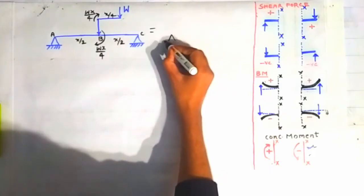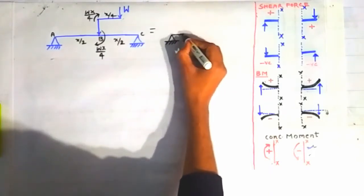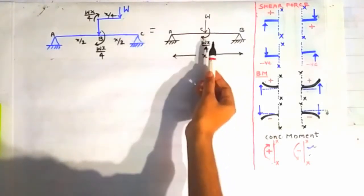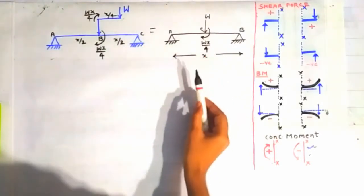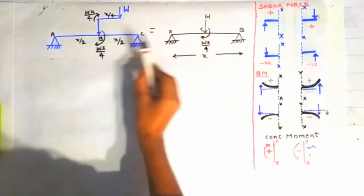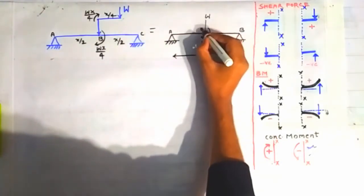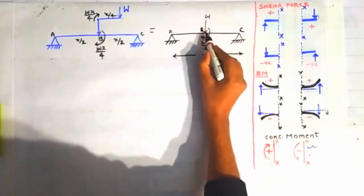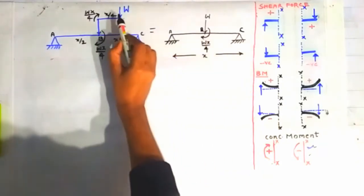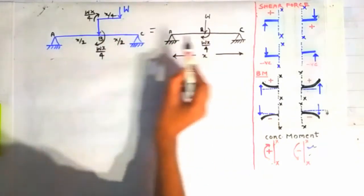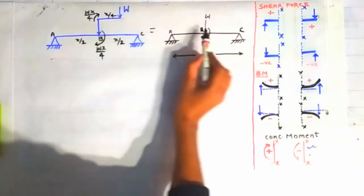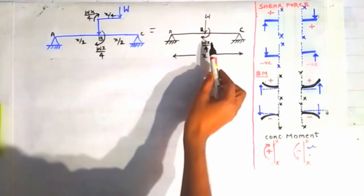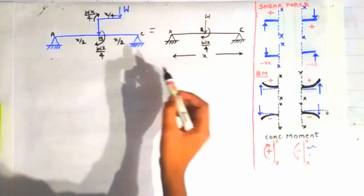So we are drawing a new equivalent beam here. We can see that this moment is acting at point B — this point is B and this is C. This load can be transferred without affecting the system; we are transferring this load at point B. Now we have to draw the shear force and the bending moment diagram for this beam.